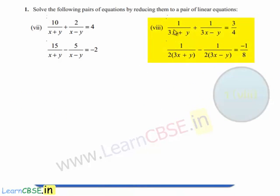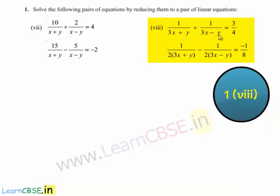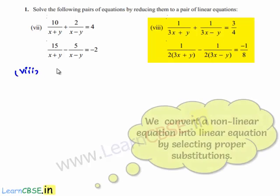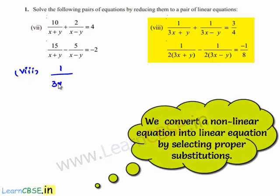Coming to the 8th bit, the given equations are 1/(3x+y) + 1/(3x-y) = 3/4 and 1/(2(3x+y)) - 1/(2(3x-y)) = -1/8. So let us assume 1/(3x+y) = a and 1/(3x-y) = b.